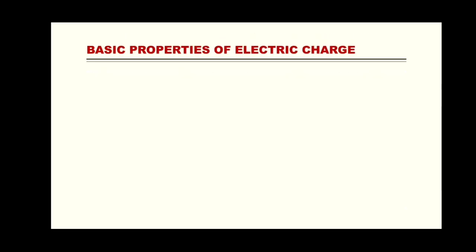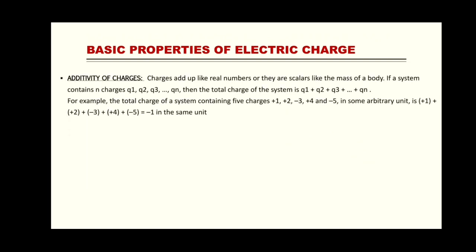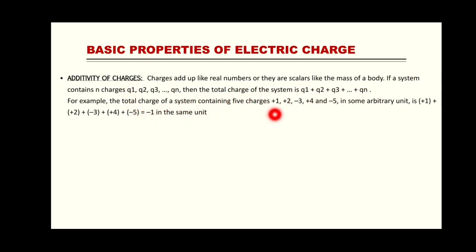The next topic of today's lecture is basic properties of electric charge. We have been studying about charge since lecture 1, so today we will discuss the basic properties of charge. The first property is additivity of charges. First of all, you need to know that charge is a scalar quantity. If any quantity is scalar, we can add it like normal real numbers. So if a body has charges q1, q2, q3... qn, the total charge of that system will be their normal addition. Since there are two types of charges — positive and negative — you can calculate total charge of the body by adding them like real numbers.